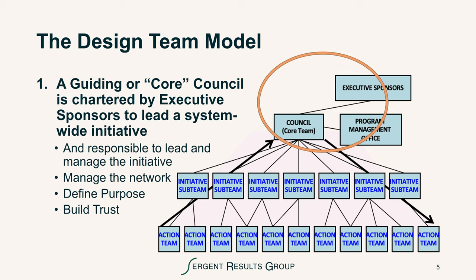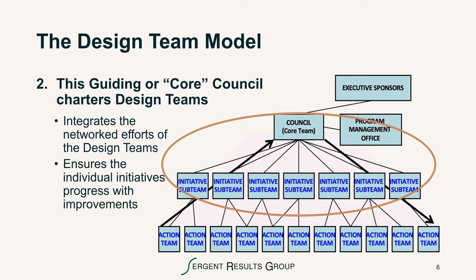This model starts with a guiding or core council that's chartered by executive sponsors to lead a system-wide initiative. This core council is responsible to lead and manage the initiative, to manage the network of interactions, to define purpose, and to build trust among the various initiative sub-teams, which is what a design team is. The core council charters individual design teams for the variety of initiatives that might be part of the systemic change they want to make.